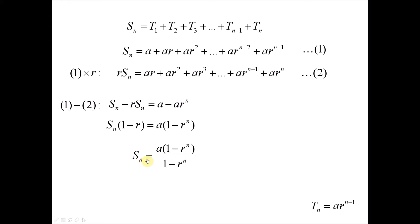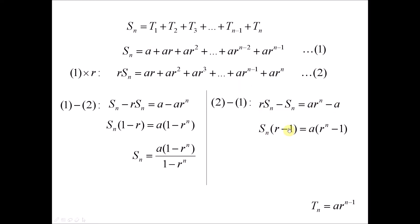To find the sum of the first n terms we need the value of the first term a and the common ratio r. If we take equation 2 minus equation 1 instead, the middle terms again cancel out, leaving ar to the power of n minus a. Factorizing gives us the second formula for Sn. Note that in both formulas, r cannot equal 1, because 1 minus 1 equals 0 and you cannot divide by 0.